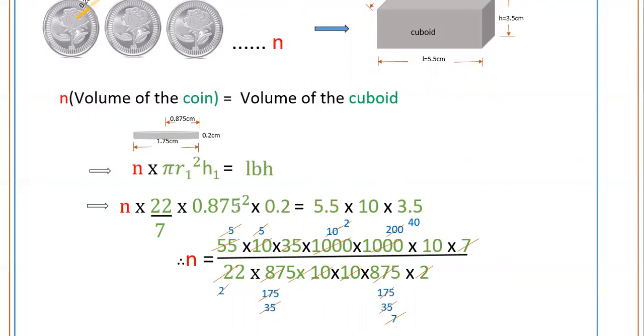0.875 times 0.875 can be written as 875 by 1000 times 875 by 1000, and 0.2 as 2 by 10. Now calculate this.